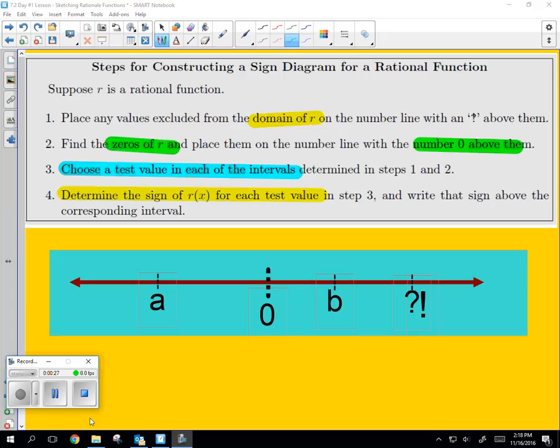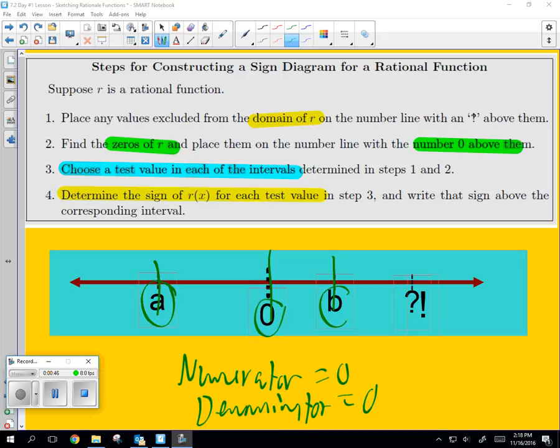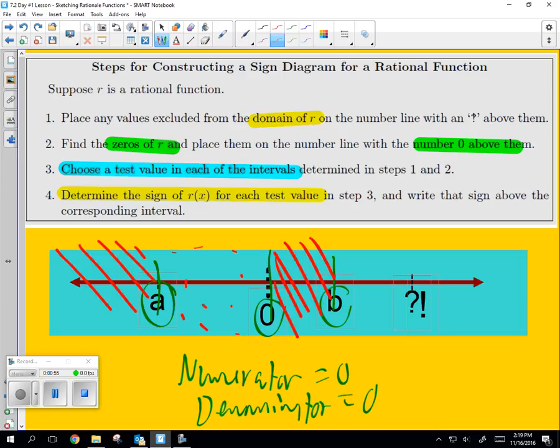We are going to look at places on the number line where the numerator and the denominator equal zero. These are going to be places on the number line that divide this into sections, different regions, like we did before.